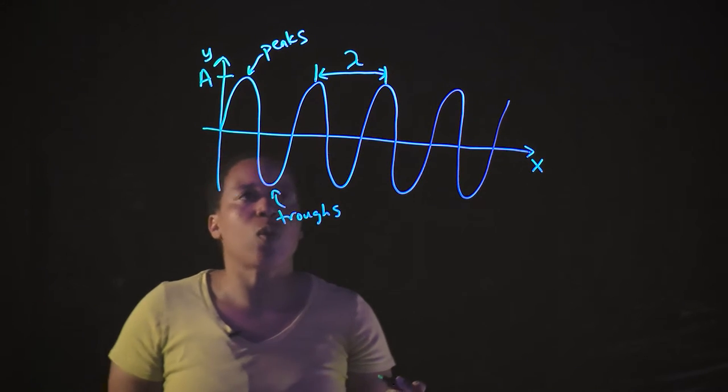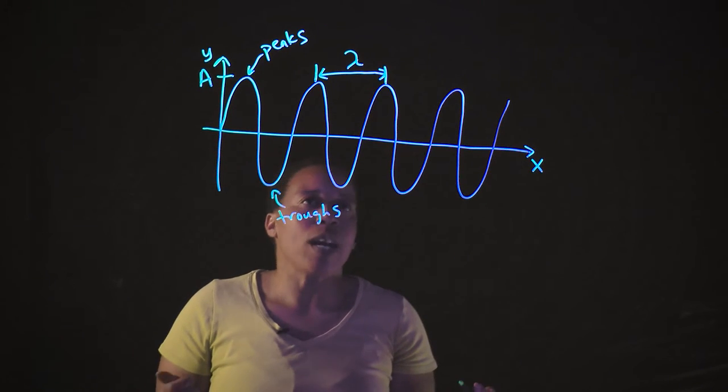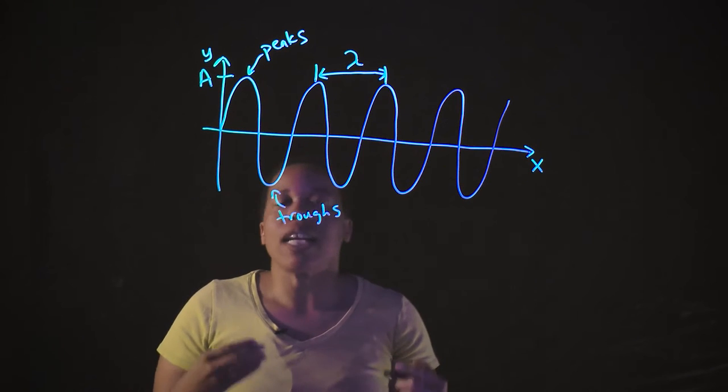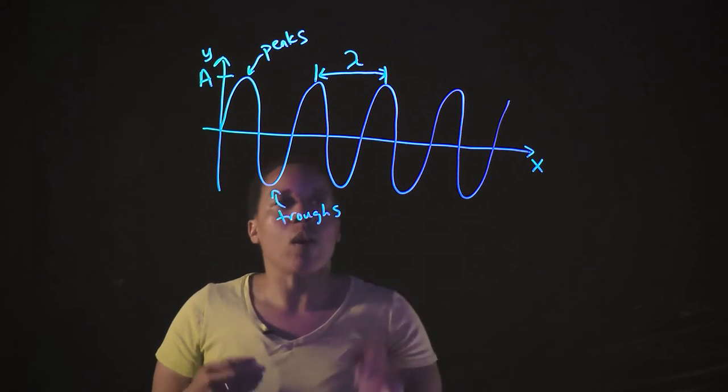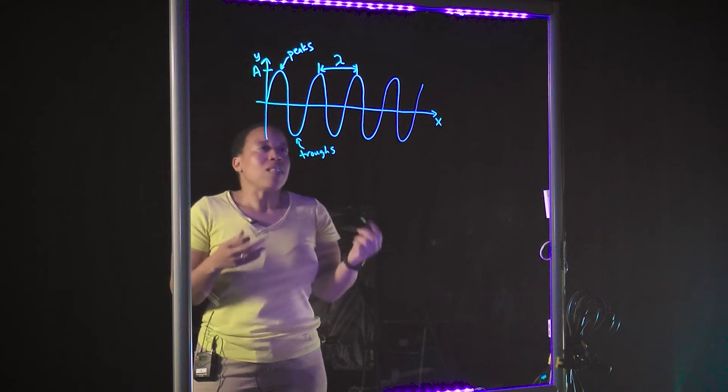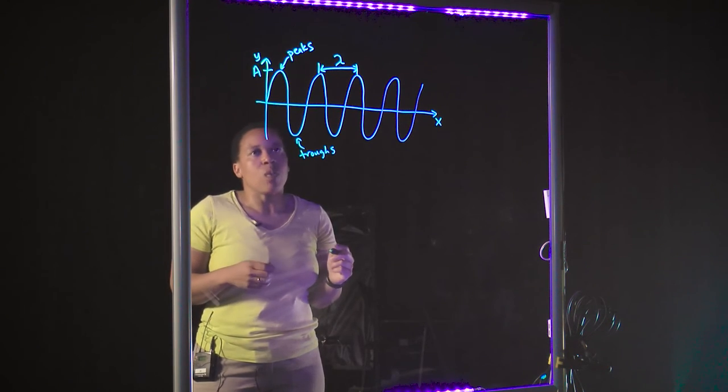And this could be a light wave, or it could be a sound wave, or a string, anything that has a wave-like property, but this is not the only representation of a wave that we have.